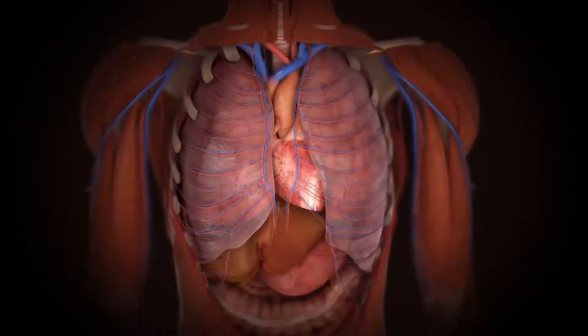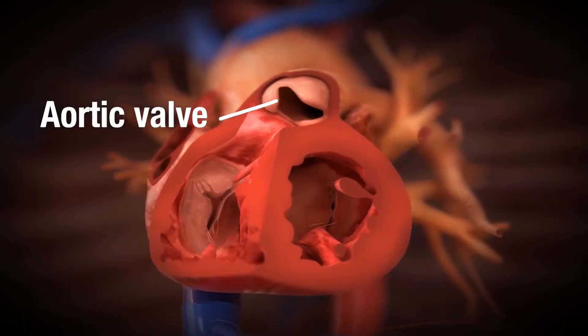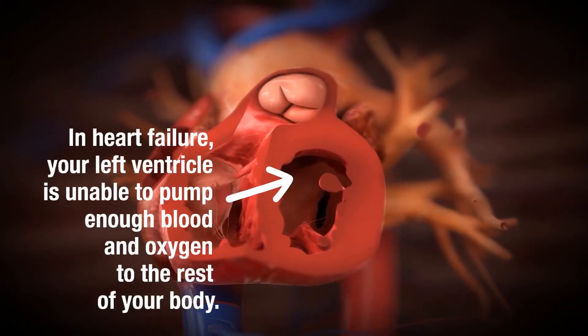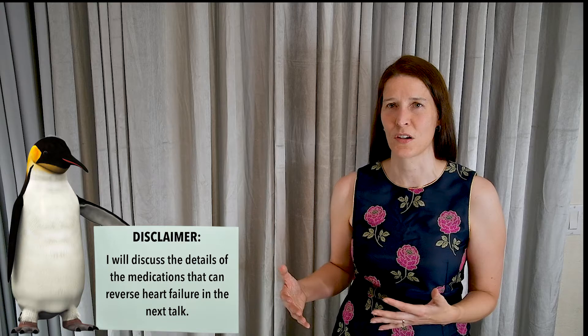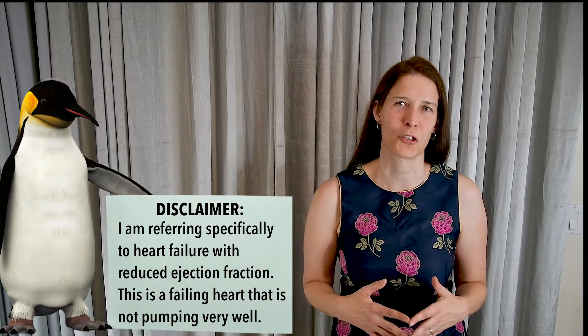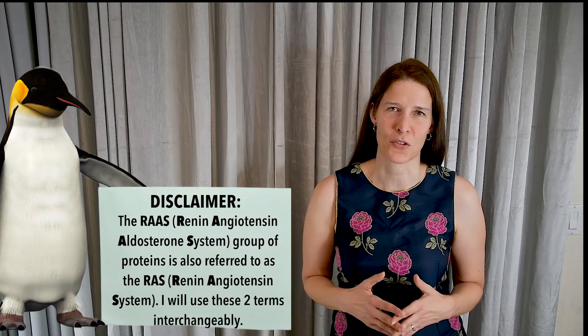What is heart failure and how can it be potentially reversed using medications? Hi, I'm Dr. Maria Conley, and today I'm going to talk about how heart failure happens and how it's possible to remodel your heart so that it's close to its normal state again by using specific medications that block your sympathetic nervous system and a group of proteins that control your blood pressure called the RAAS, short for renin-angiotensin-aldosterone system.